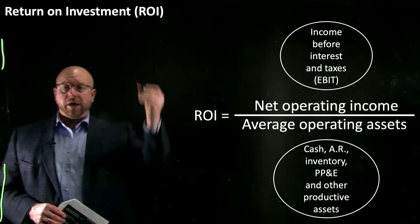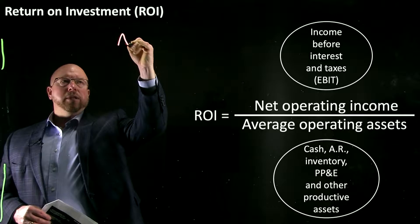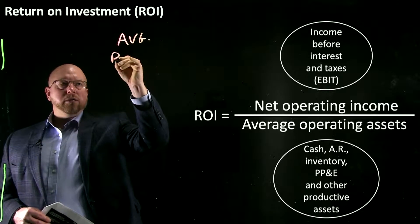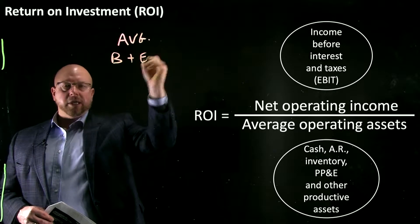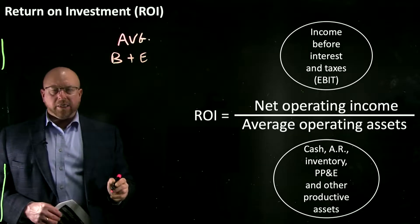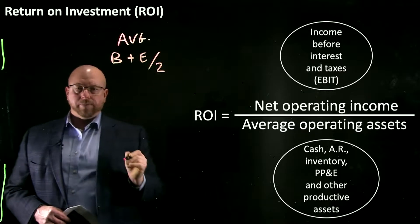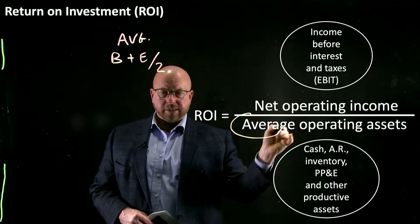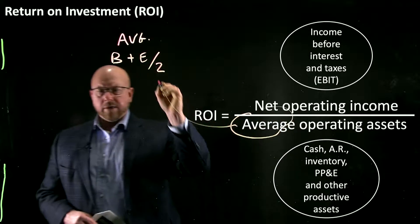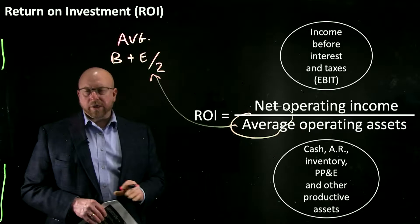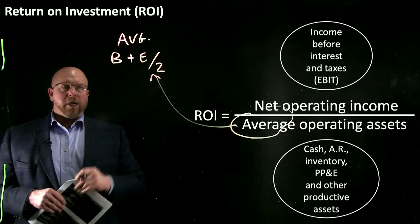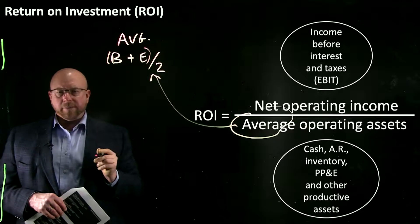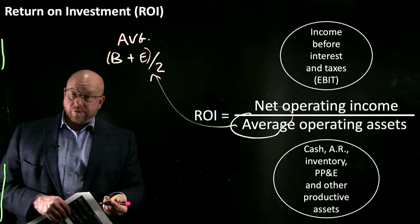One thing to point out: anytime we deal with an average, a simple way to do the calculation is beginning plus ending balance divided by 2. So as you're looking at an average for operating assets, look at what your beginning operating assets are, look at what your ending operating assets are, add them up, divide by 2, and you get the average.